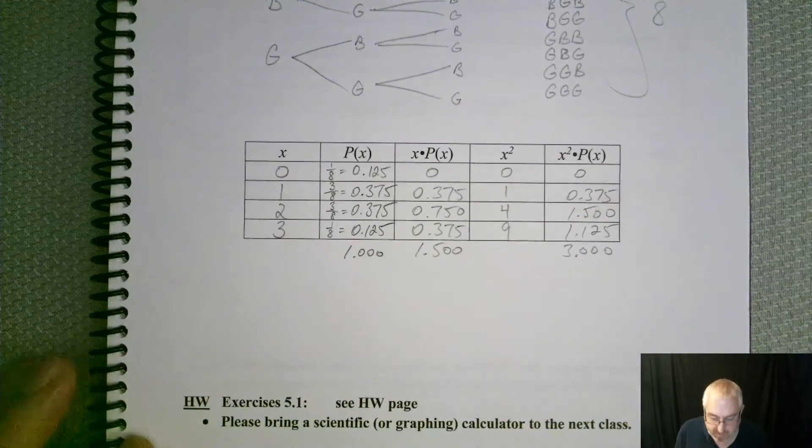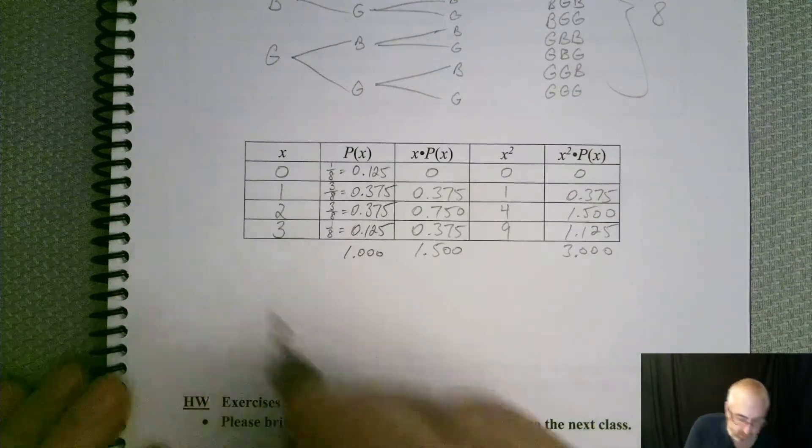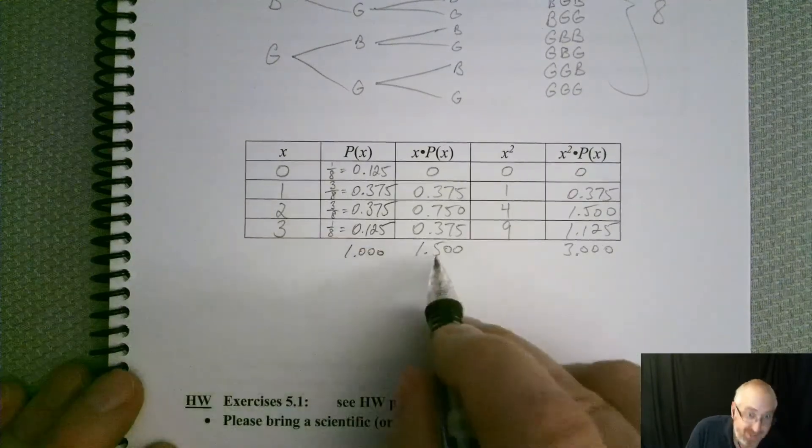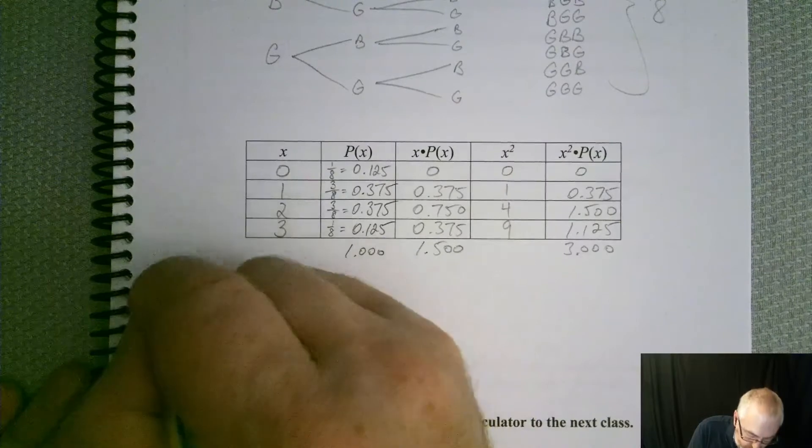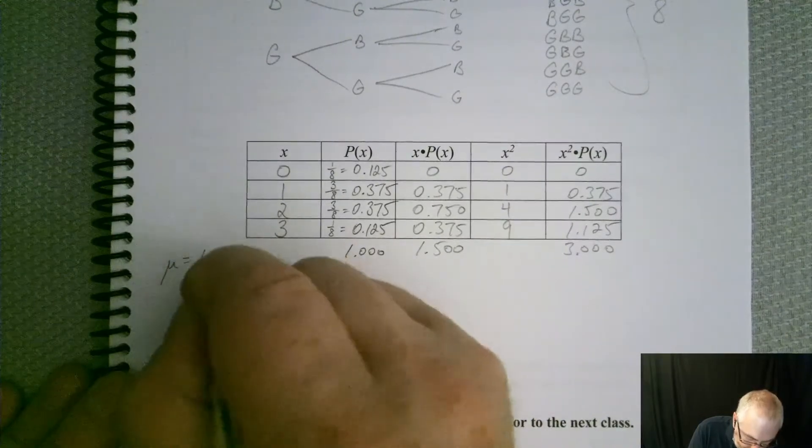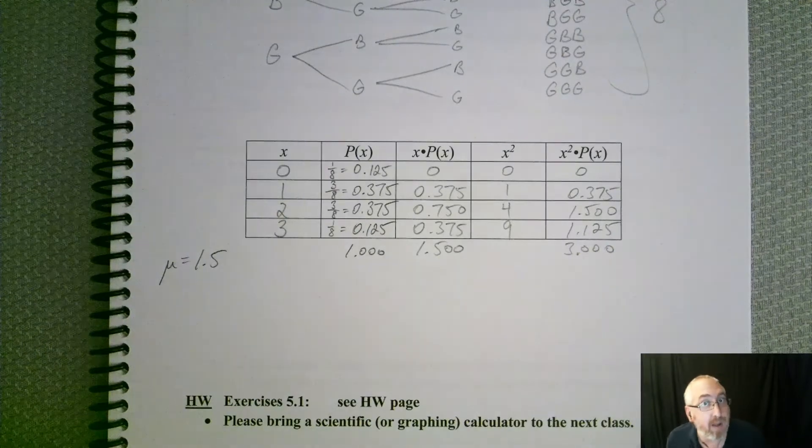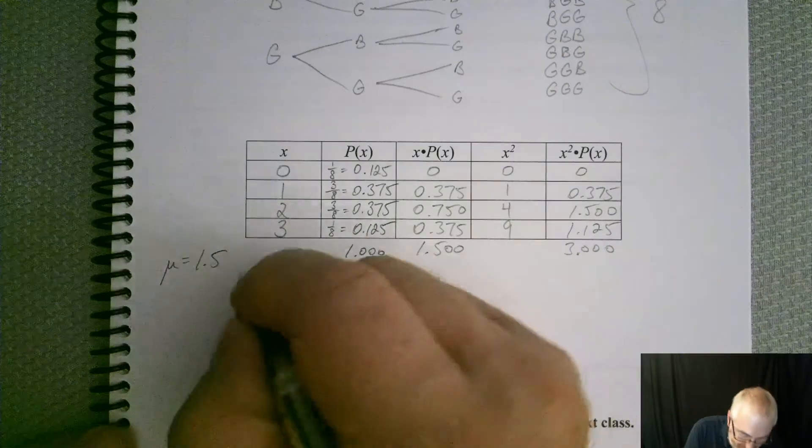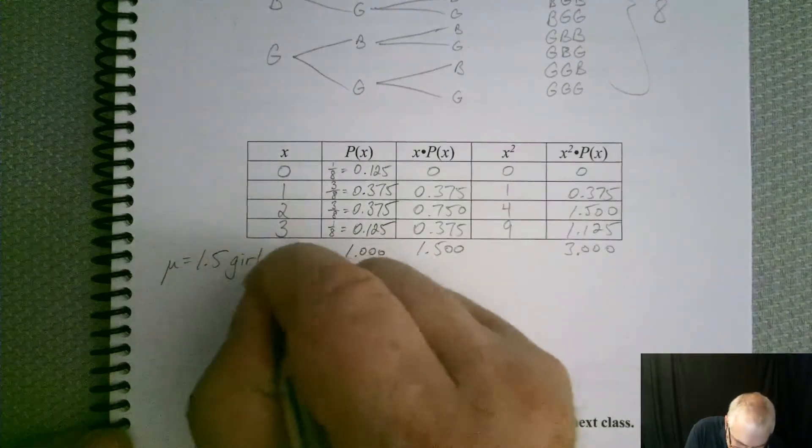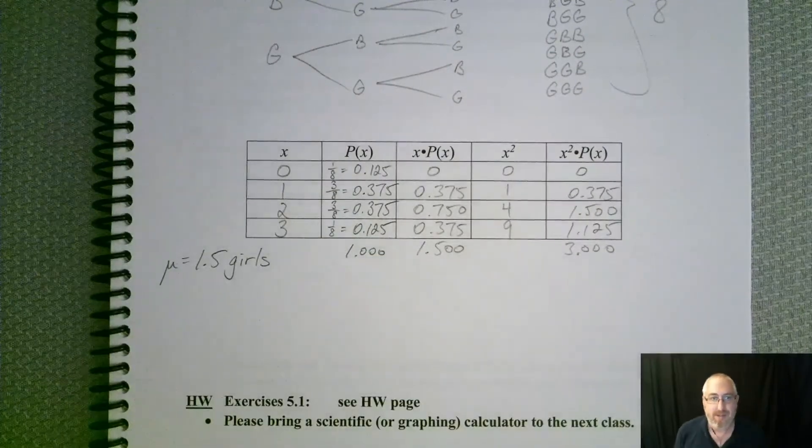Okay. So now let's find our mean and standard deviation. So the mean, remember, is just this. 1.5, so mu is equal to 1.5. Yeah, don't forget the girls. 1.5 girls is going to be on there.